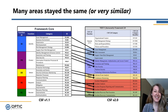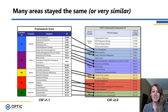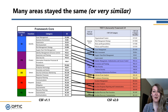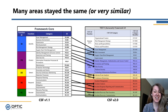Many areas stayed the same or are very similar to 1.1. There are decent wording changes and nuanced updates, but a lot of categories are largely the same — from asset management to awareness and training, where there was some consolidation, and data security, where there was clarification. Around detection, event analysis and monitoring also saw some updates. I don't want to make it sound like everything changed — there are many areas that have been tweaked slightly but are largely the same.